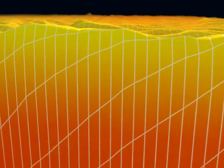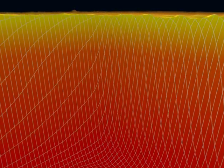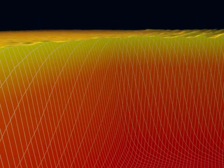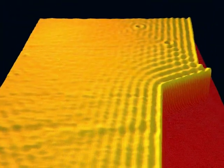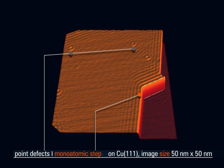The tunnel current depends also on the electron density of the sample. Therefore, investigations of the electronic properties are possible. We study how the electron density varies due to electron scattering processes. We observe a wave-like modulation pattern of the electron density. Its characteristics are described by the laws of quantum physics.